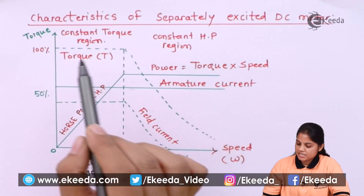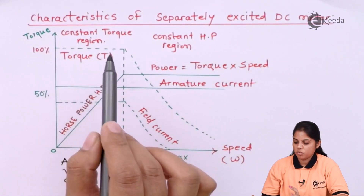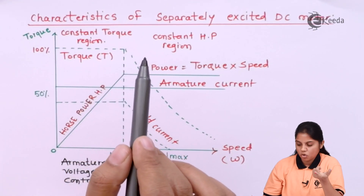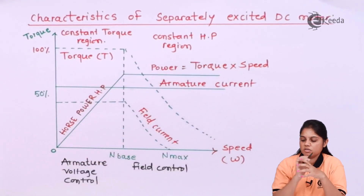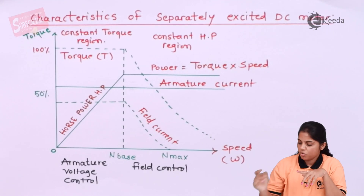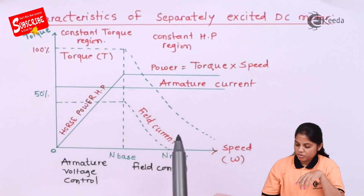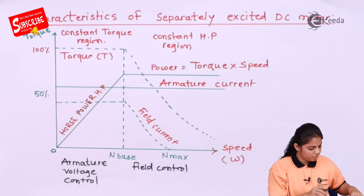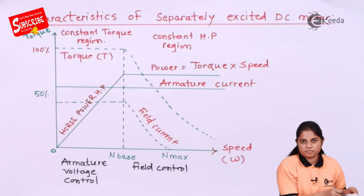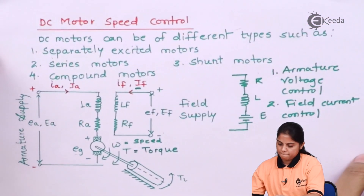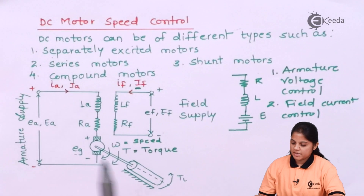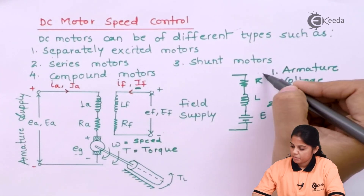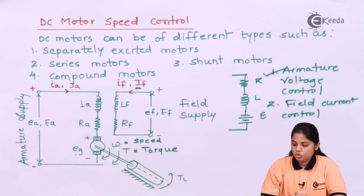We will see why the first region is called the constant torque region — how torque remains constant — and why the second is called the constant horsepower region. Before that, let me show you the diagram one more time. This is the diagram we have seen. The first method is armature voltage control.